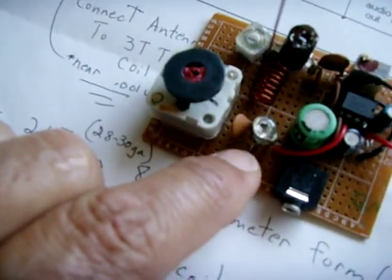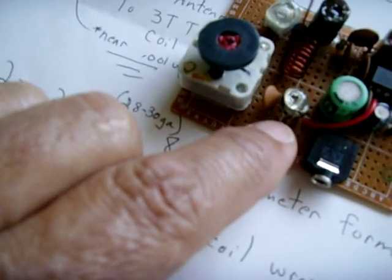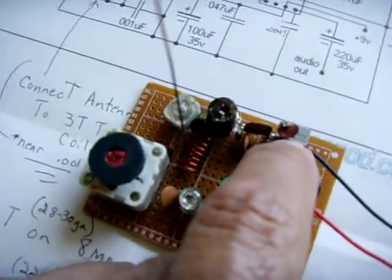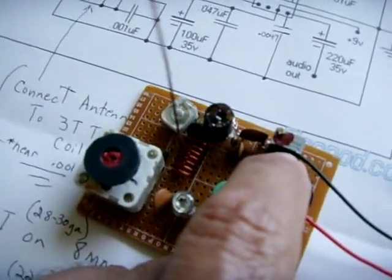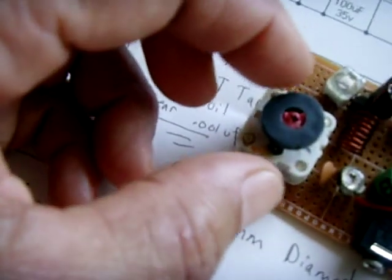This one here is the 1K and that adjusts the gain also. Once you set that where you like it, don't touch it. So I sealed that one off. This one here is the 10K and that one is what determines the volume. So you just want to play around with the volume and this adjusts the frequency.